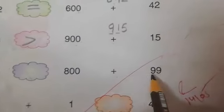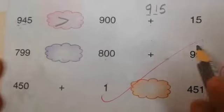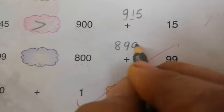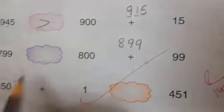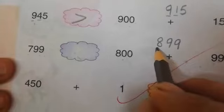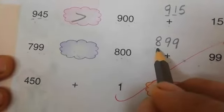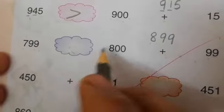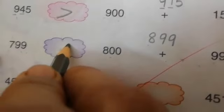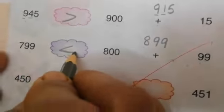799 and 800 plus 99. First we have to add 800 plus 99: that is 899. This is 700 and this is 800. Which 100 is greater? 800 is greater. So it means 899 is greater than 799.